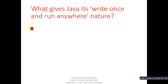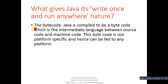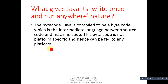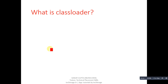Next question: what gives Java its 'write once and run anywhere' nature? The answer is bytecode. Java is compiled to bytecode, which is an intermediate language between source code and machine code. This bytecode is not platform-specific and hence can be fed to any platform — so Java bytecode is platform independent and you can run it anywhere.